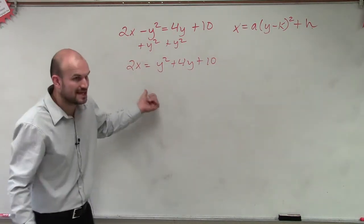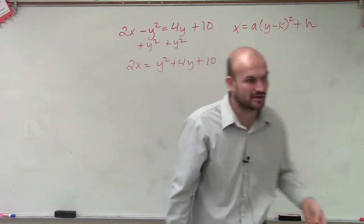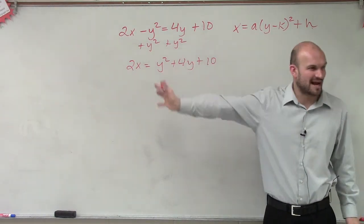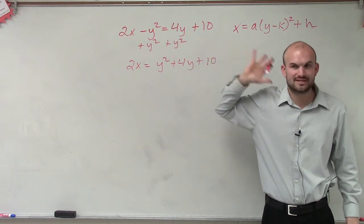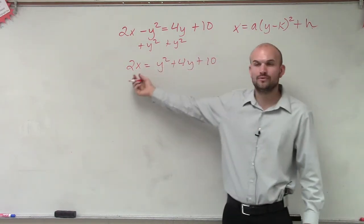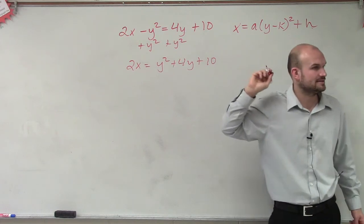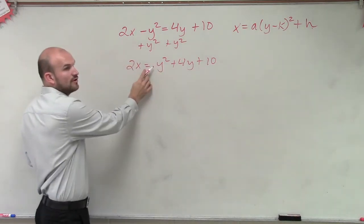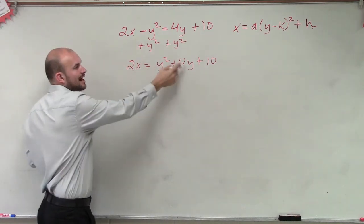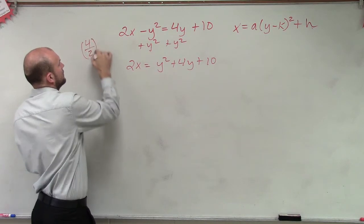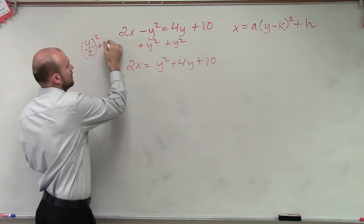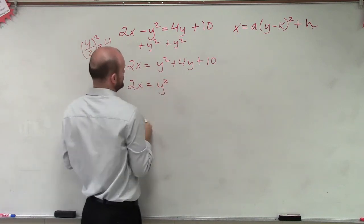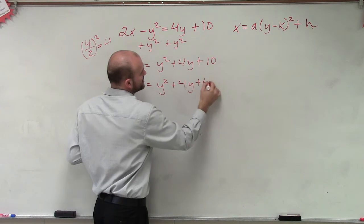We could isolate the x, and I did that last class period to show them that you can still do it and complete the square. However, then you're going to be dealing with fractions, and I would just say avoid it unless you have to. We can divide the 2 at the end. So we need to complete the square here. Since I don't have a coefficient in front of my y, I can just take 4 divided by 2 and square it — that gives me 4. So 2x equals y squared plus 4y plus 4.